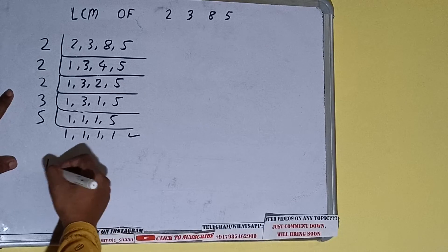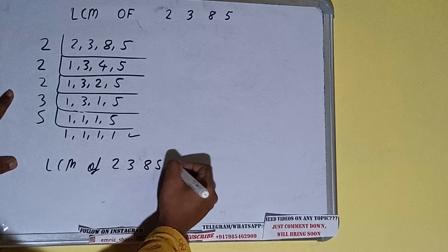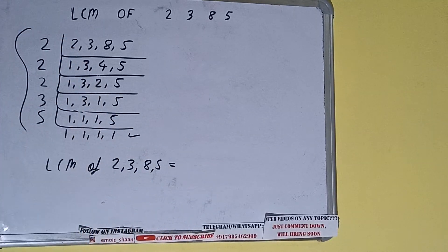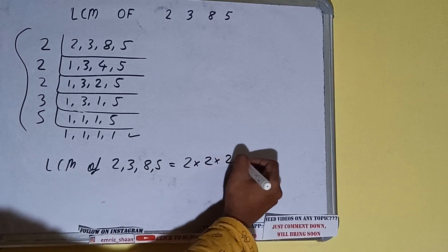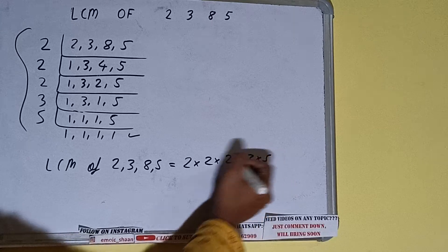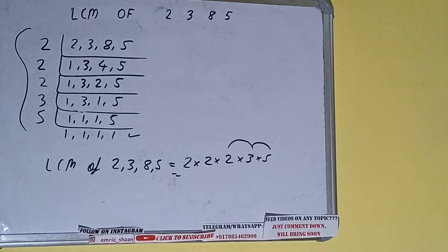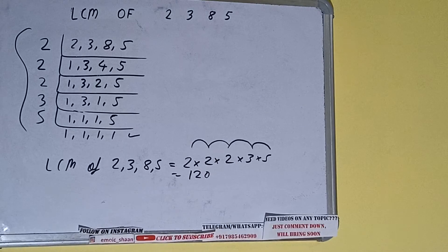Now the last step: the LCM of 2, 3, 8, and 5 is equal to multiplying whatever we have on the left-hand side — that is 2 × 2 × 2 × 3 × 5. So 5 × 3 = 15, 15 × 2 = 30, 30 × 2 = 60, 60 × 2 = 120. So the LCM is 120.